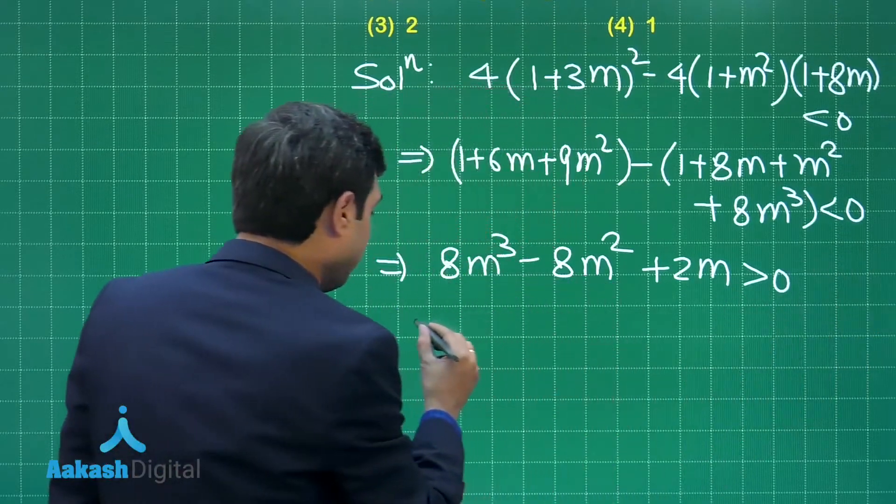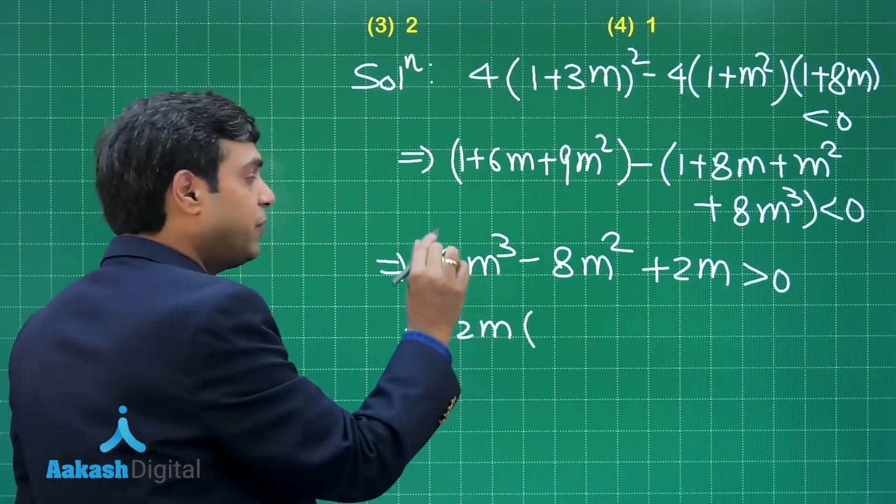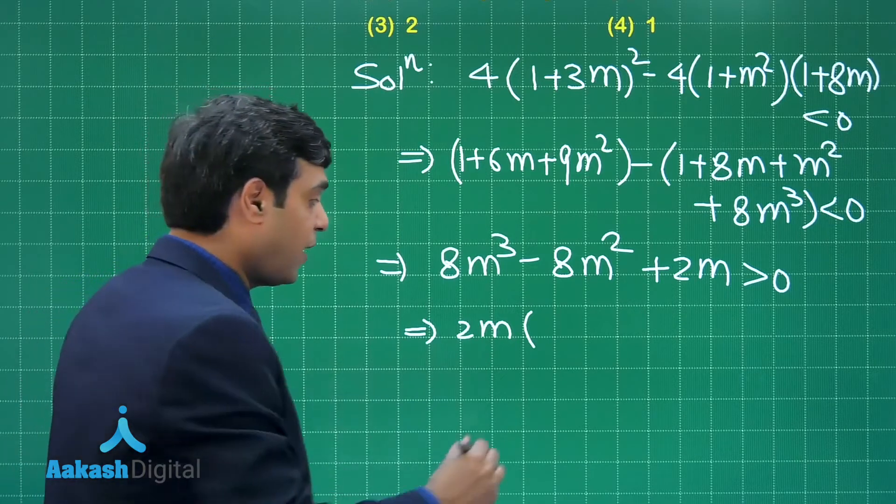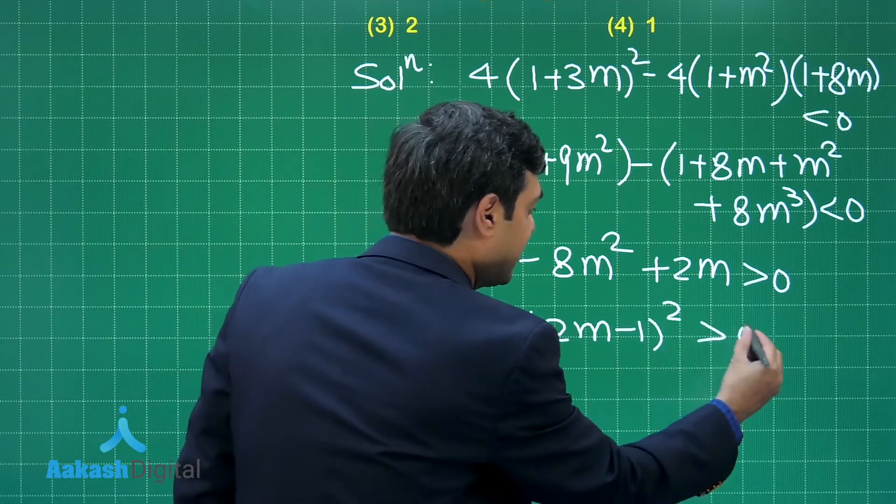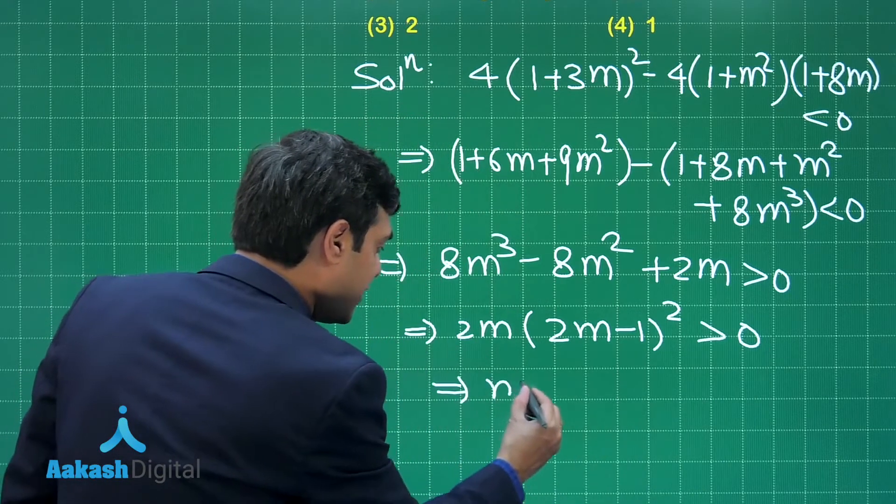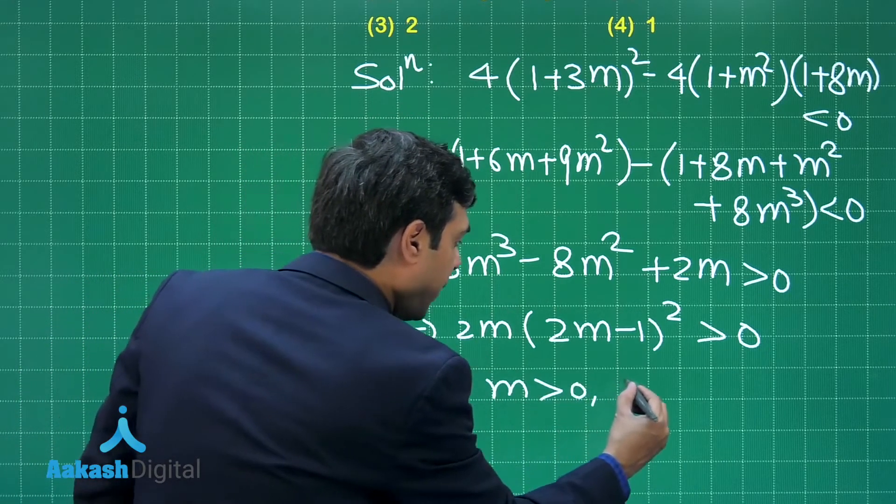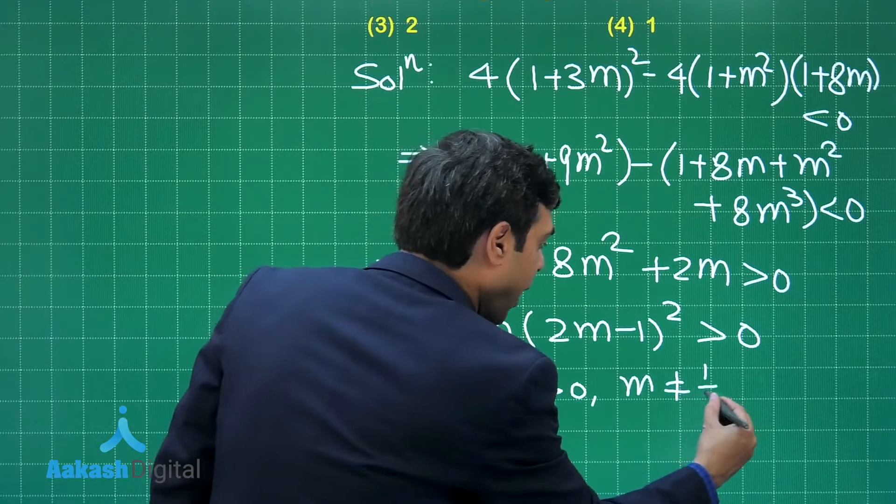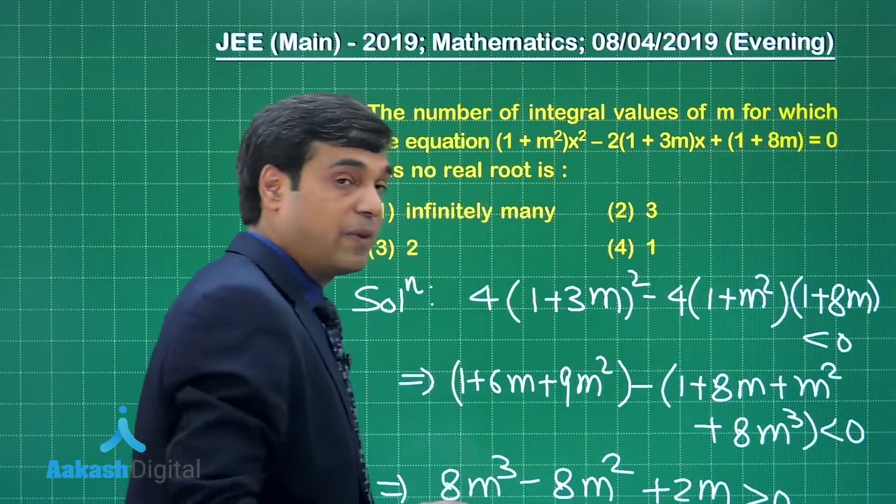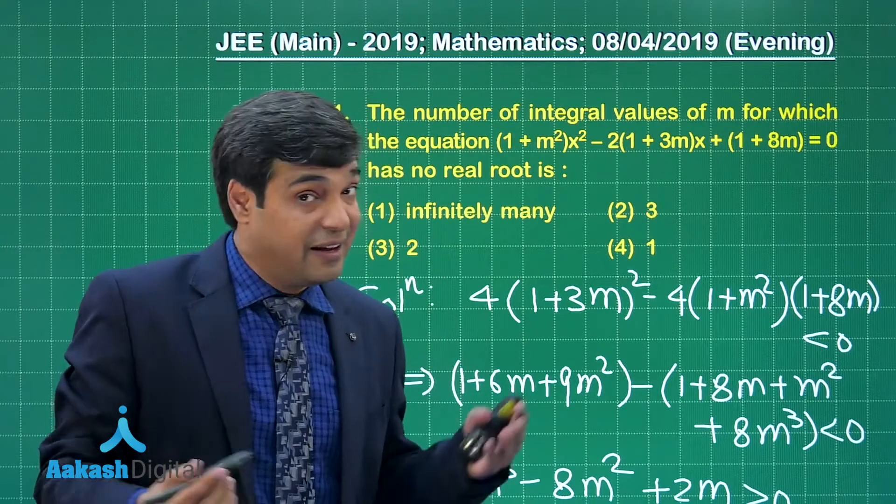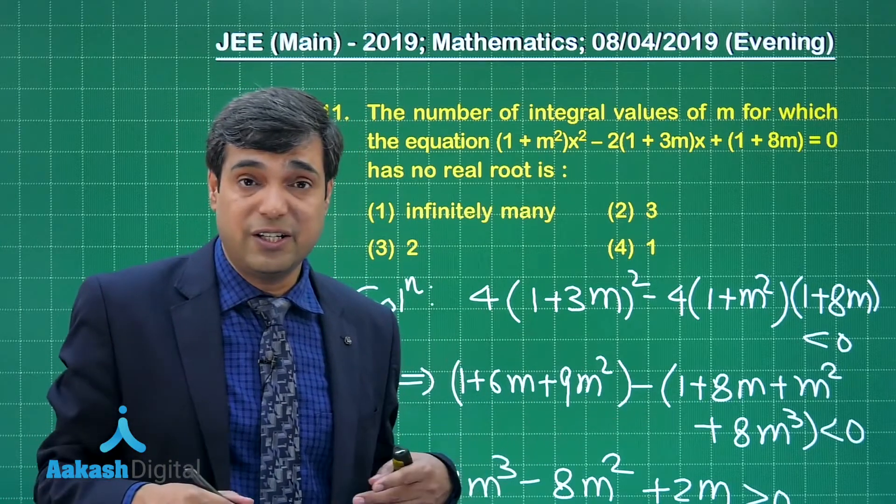So we can take 2m common. We are left with 4m² - 4m + 1, that is (2m - 1)² greater than 0. So the simple conclusion is m is greater than 0 but m is not equal to 1/2. Now question is talking about integral values of m. How many integral values of m are there?